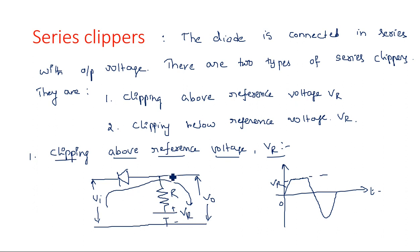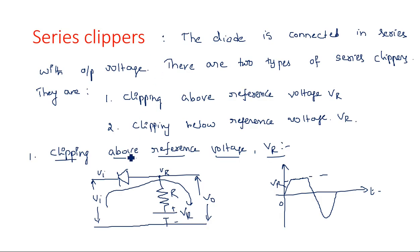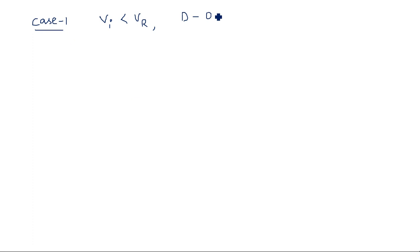Now for operation: in the absence of V0, we have VR and Vi. Depending upon the diode on/off conditions, the output waveform is determined. Case 1: Vi is less than VR. The cathode terminal is low and the anode terminal is high, which means the diode is in on state.